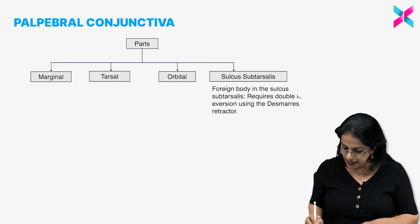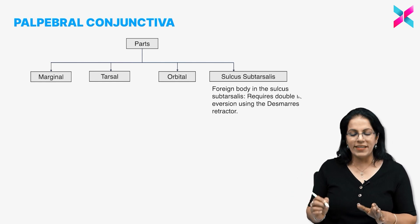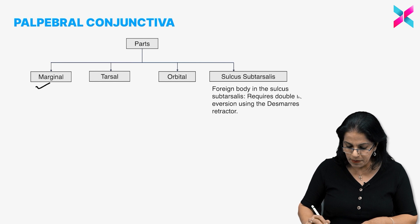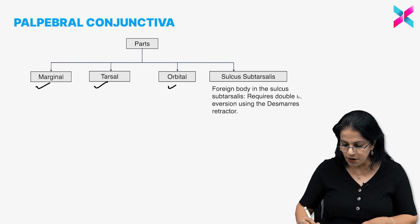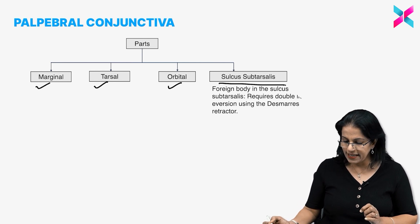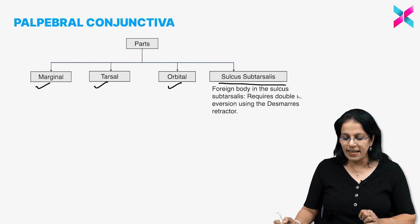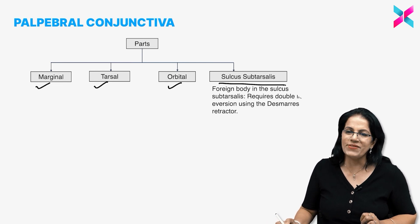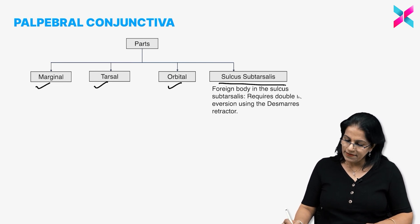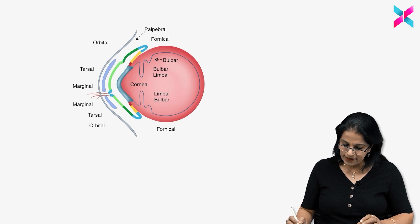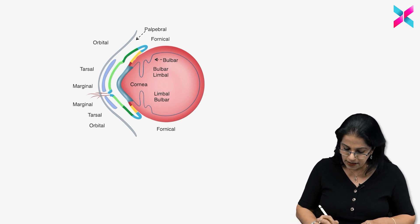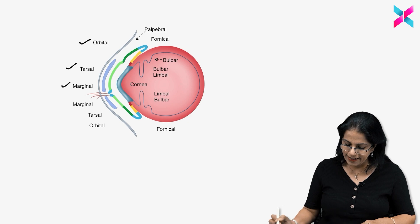Here we are, a quick revision again. Whatever we have drawn diagram is written here, that palpebral has marginal, tarsal, orbital and sulcus subtarsalis is the area which I just explained it to you. Again you can see the same parts of the conjunctiva palpebral here in the diagram.